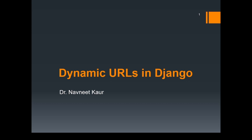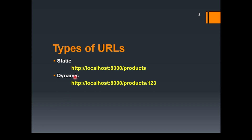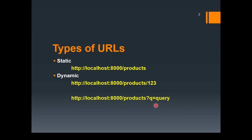Welcome to this lecture. Here we are going to discuss more about dynamic URLs in Django. In the previous lecture, we implemented dynamic URLs using the concept of route parameters. There is another way to work with dynamic URLs, and that is using the concept of query parameters or query string.